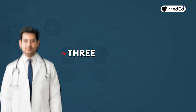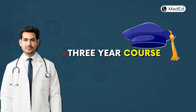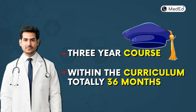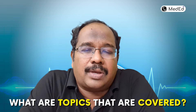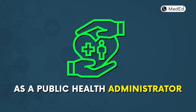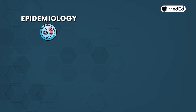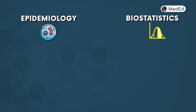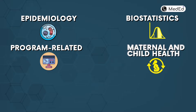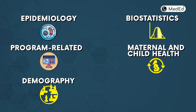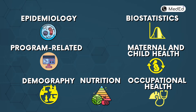As far as the curriculum is concerned, it's a three-year course — totally 36 months. The topics covered include public health administration, epidemiology, biostatistics, program-related topics, maternal and child health, demography, nutrition, and occupational health.